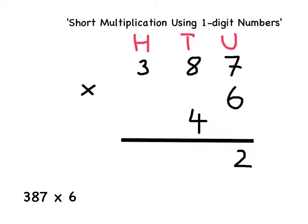For the next part of my short multiplication, I must look at the tens column multiplied by 6. This means 80 multiplied by 6.